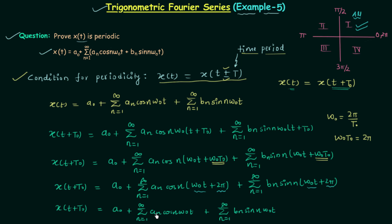Comparing the right-hand side of this expansion with the original expansion, you will find both right-hand sides are the same. Since the right-hand sides of the two expansions are equal, this means X(t + T₀) equals Xt. Therefore, the condition for periodicity is satisfied by signal Xt, so Xt is a periodic signal and we have proved it. This is all for this lecture; if you have any doubt you may ask in the comment section. See you in the next one.